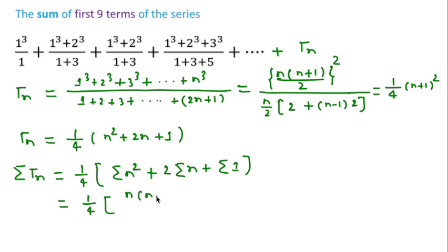1/4 times [n(n+1)(2n+1)/6 + 2×n(n+1)/2 + n]. Since we have to find sum of first nine terms, so if we put n equal to...